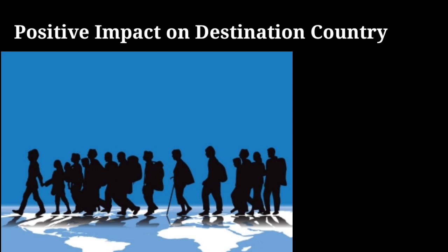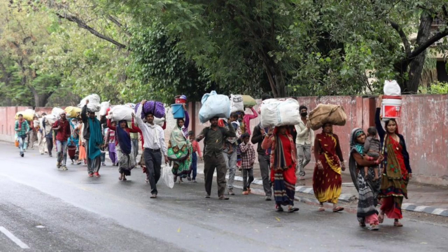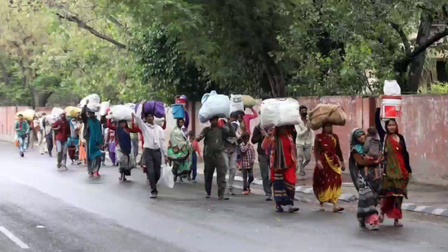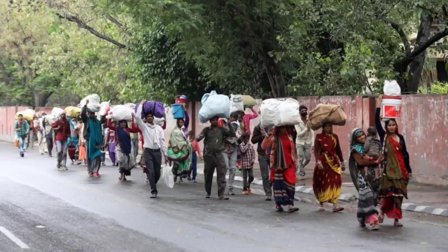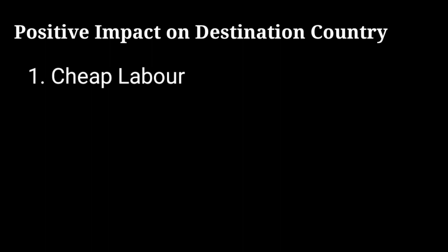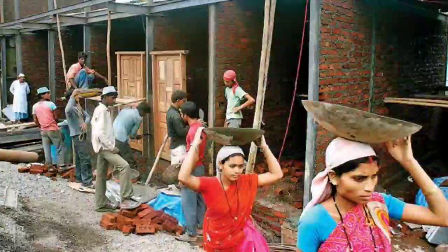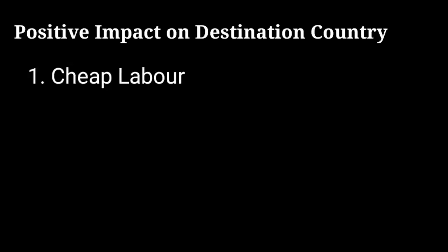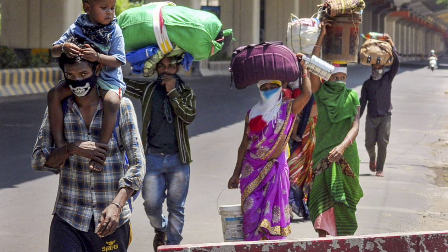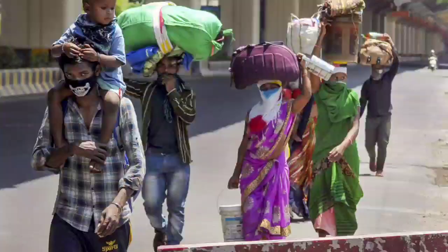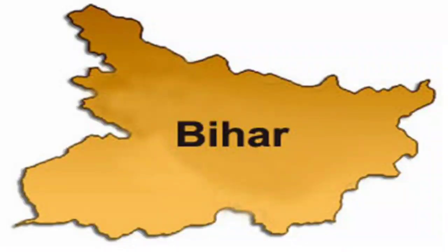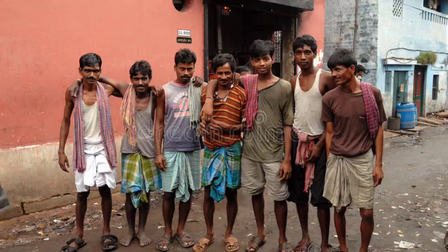Starting with the destination country, let's discuss some positive impacts. First, when a migrant reaches a particular destination, the destination country benefits from cheap labor. Migrants often do many unskilled jobs for a very small wage. Skilled migrants are also often happy to work for a small salary. For example, migrant laborers from Bangladesh work on small wages in India, and similarly laborers from Bihar work in different states of India for very low wages.